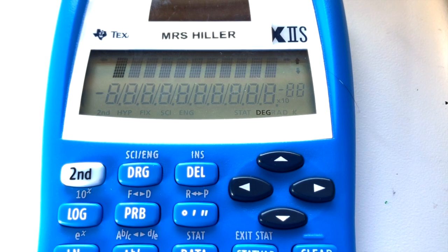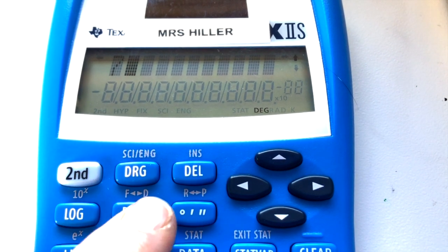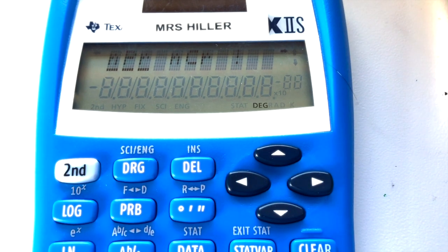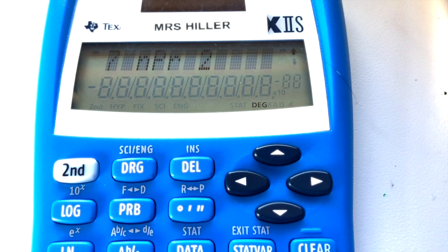To calculate 7P2, put in the 7, press the PRB key, choose nPr, hit enter, and put in the 2.